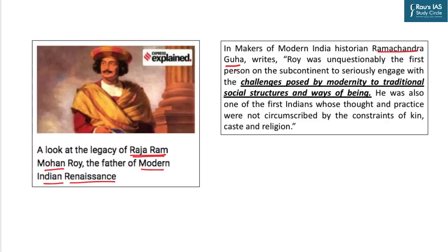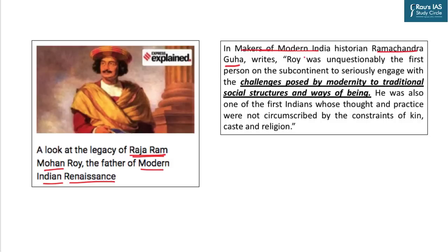The modern Indian historian Ram Chandra Guha has written in his book Makers of Modern India, where he discusses the contribution of various men and women in forming the modern republic. He writes: Roy was unquestionably the first person in the subcontinent to seriously engage with the challenges posed by modernity to traditional social structures and ways of being. He was also the first Indian whose thought and practice were not circumscribed by the constraint of kin, caste, and religion.